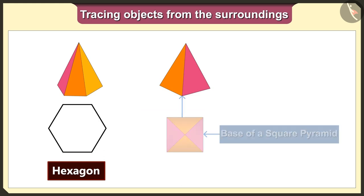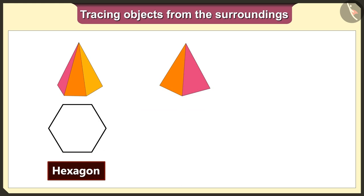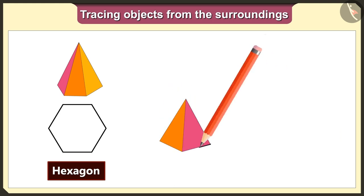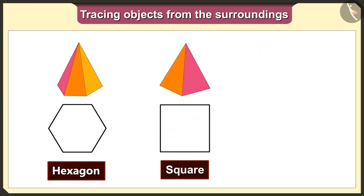Now we will trace the square pyramid. The base of the square pyramid is a square, so we will get a square shape when we trace this pyramid.